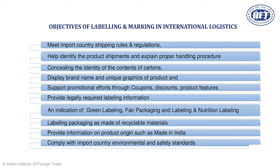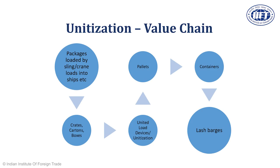One should also know the role of unitization in logistics. Once goods are manufactured and packed, they have to be unitized for easy dispensing, easy handling, and during loading and unloading in international trade. Packets are created into crates, crates into units, units into pallets, pallets into containers, and then finally it goes to a vessel — either by vessel or by lash barges. That is the value chain we should understand. These are examples of how cargo is unitized.